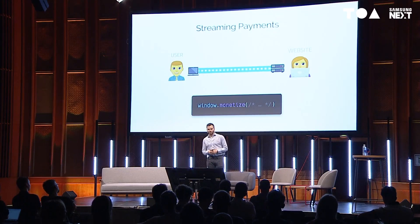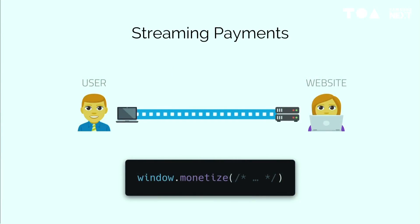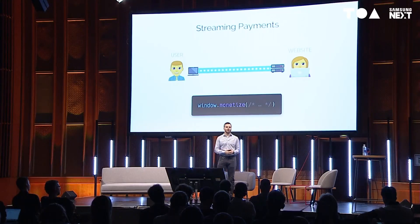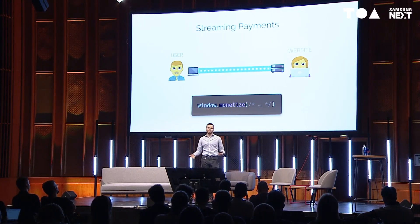The way to imagine it is streaming payments from you to the website going on in the background as you browse. It's implemented via a browser API called window.monetize. The website calls that API, and the browser gives it something similar to a WebSocket — a payment-enabled socket — which the website uses to connect to paid endpoints. The amount the website can charge is limited by time: the longer you spend on it, the more it can earn. In the future this could be more intelligent, but that's a good place to start.